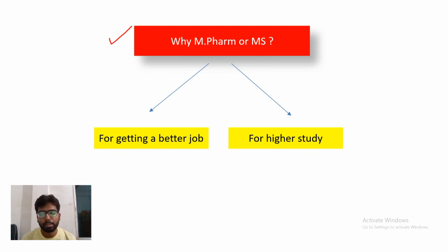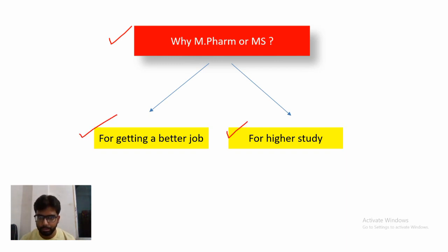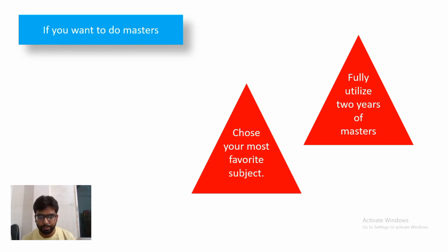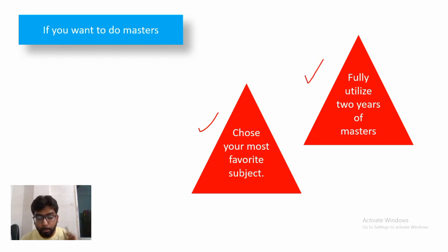Why are you aiming to do M.Pharm or masters? There are two reasons: number one, to get a better job; number two, for higher study. These are the most common reasons. If you want to do masters for either of these two reasons, then you have to keep in mind two important points: number one is subject selection, and number two is utilization of time.